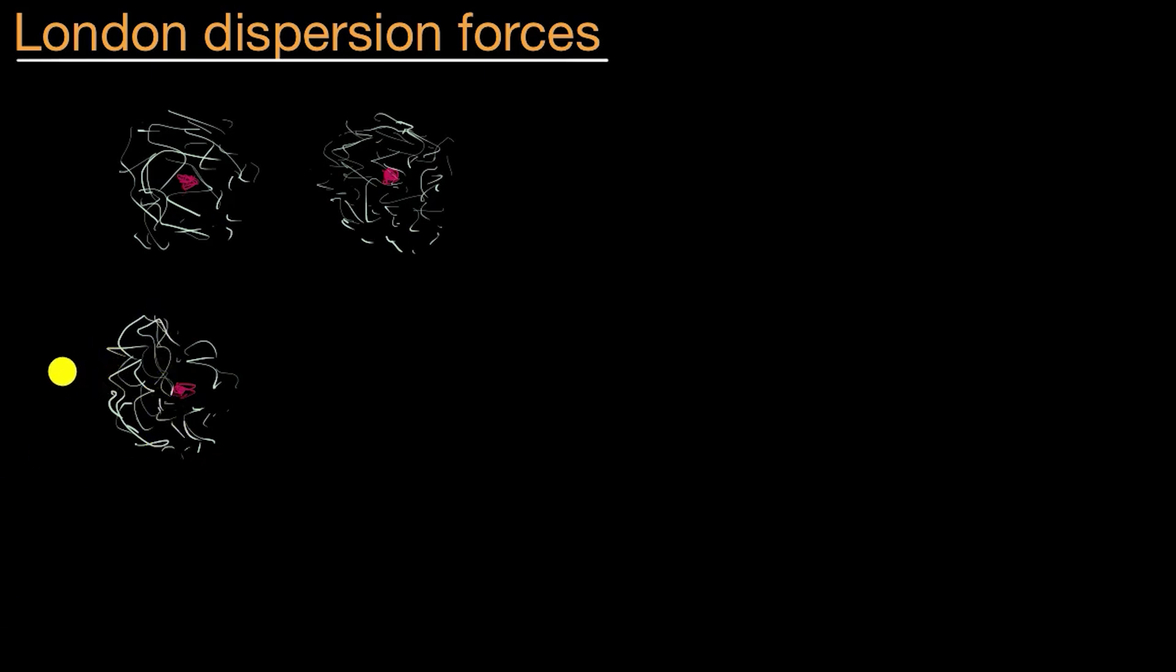And so for that brief moment, you have a partial negative charge. This is the Greek letter delta, lower case delta, which is used to denote partial charge. And on this side, you might have a partial positive charge. Because remember, when it was evenly distributed, the negative charge was offset by the positive charge of the nucleus. But here on the right side, because there's fewer electrons here, maybe you have a partial positive. On the left side, where most of the electrons are in that moment, partial negative.